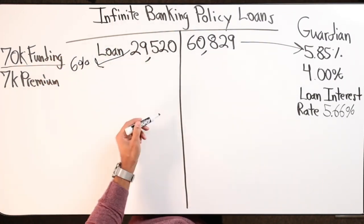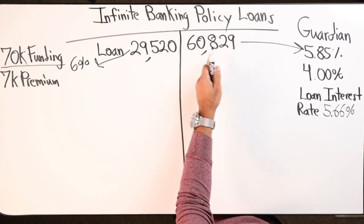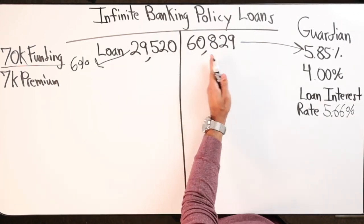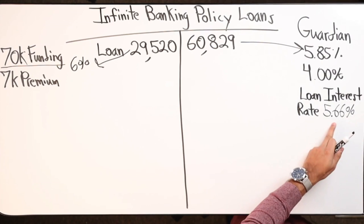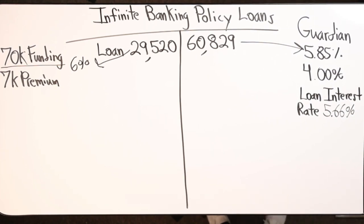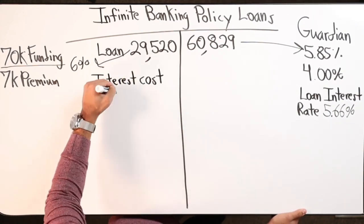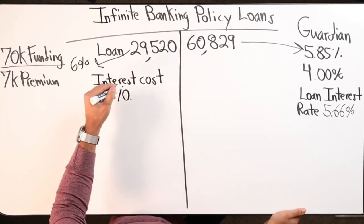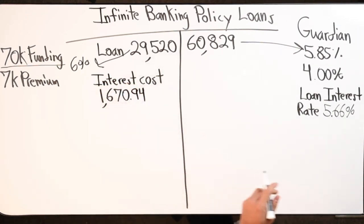This portion - the $29,520 - is going to be earning a 6% interest rate. So a portion of $29,520 out of $60,829 is earning 6%, the rest is earning between 4% and 5.85%. I'm being charged 5.66% on $29,520, so $29,520 times 5.66% - that's an interest cost of $1,670.94.